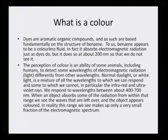What is a color? When we try to understand that dyes impart color, we should also understand the physics of this color. Dyes are aromatic organic compounds and as such are based fundamentally on the structure of benzene. To us, benzene appears to be a colorless fluid; in fact, it absorbs electromagnetic radiation just as dyes do, but it does so at about 200 nanometers, so that we do not see it.